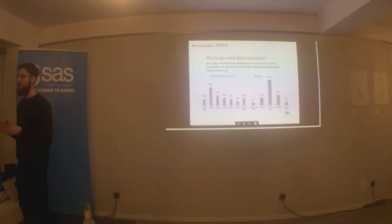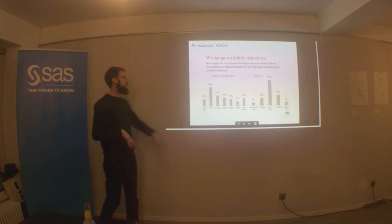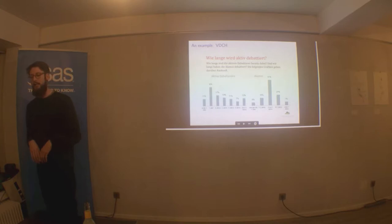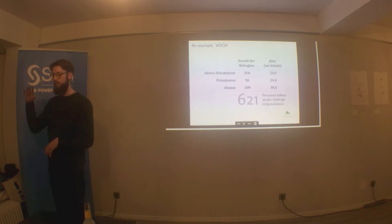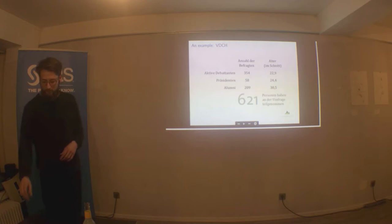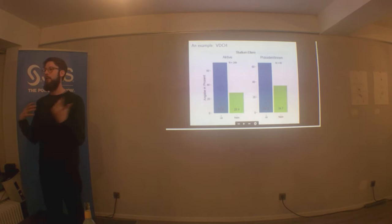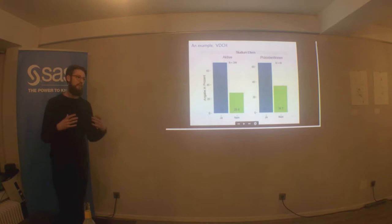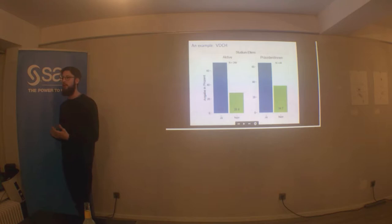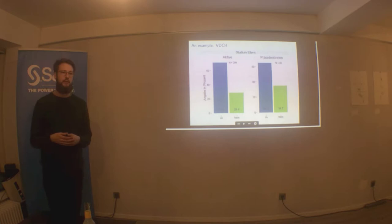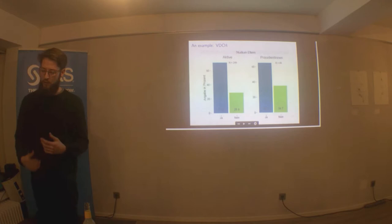In terms of data visualisation, often when you're working with NGOs you're not doing anything very fancy — mostly just bar charts and so on. This is just one example from the report: what people say about how long they've been involved in debating, a breakdown of the age of people, and the background of these people — whether their parents studied at university — because it's a bit of a leap to be doing university debating. They're hoping to change that, and the first step is really knowing the background of people and how many are role models not coming from university households.